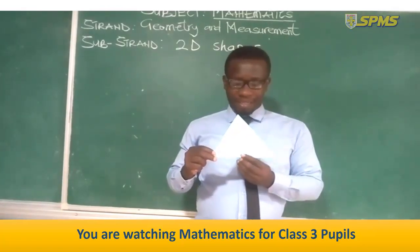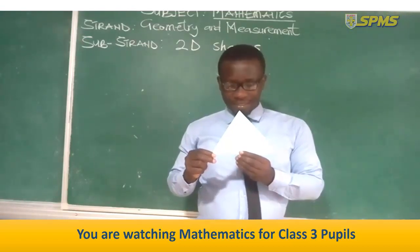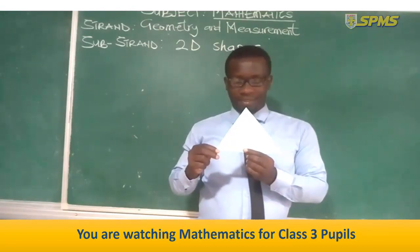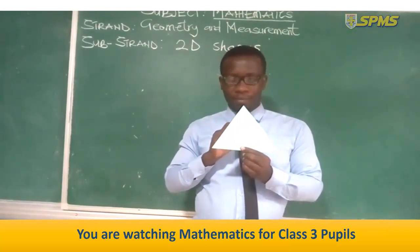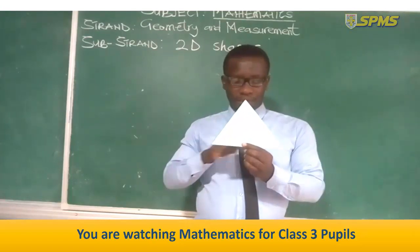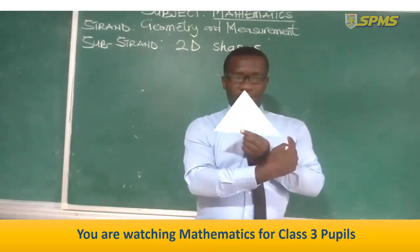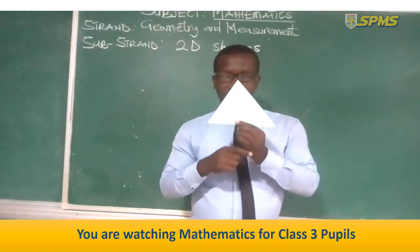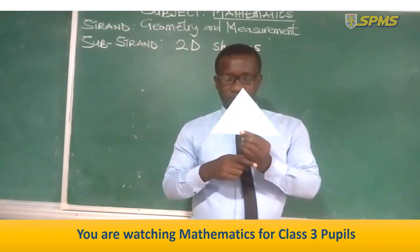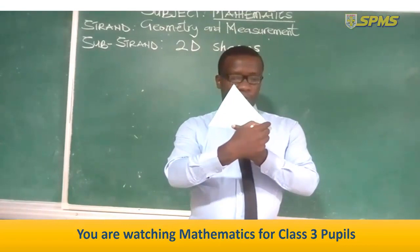Now, what shape is this? Yes, a triangle. How many sides has a triangle? One, two, three — it has three sides. And how many corners has a triangle? One, two, three.